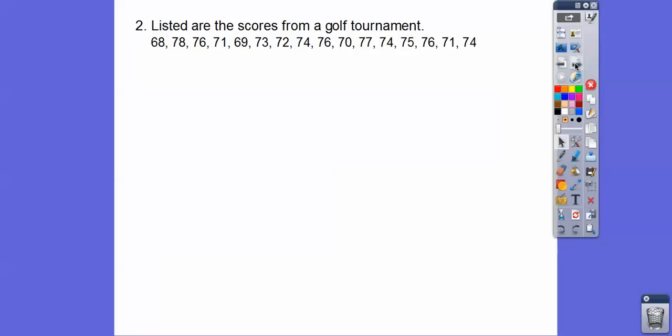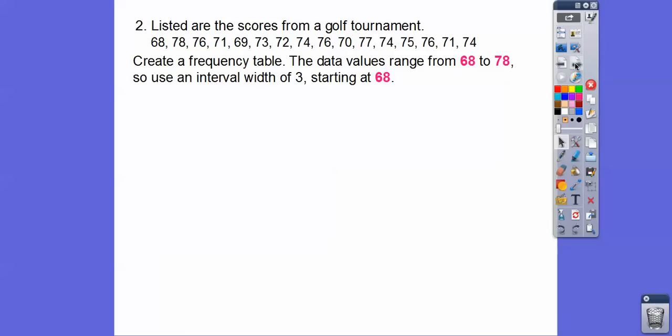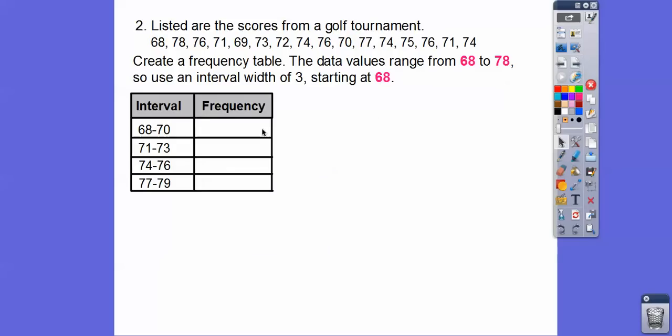Here's another one. Listed are the scores from a golf tournament. I know nothing about golf except you hit a ball. Some people like it. I just don't see the point. But I think it's whatever. Sorry. So we're going to create a frequency table. And this data ranges from 68 all the way up to 78. And I guess a lower score is better. So we're going to use the interval of width 3 starting at 68. So 68. Think of your fingers. Count with your fingers by 3. 68, 69, 70. So that would be our first interval. And then we start off with 71, 72, 73.